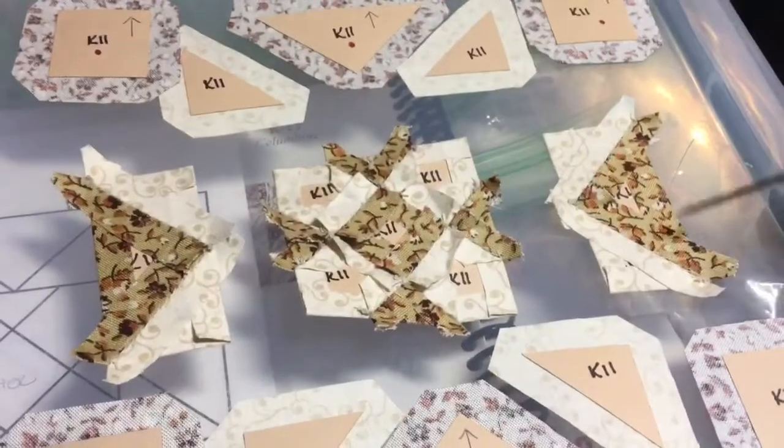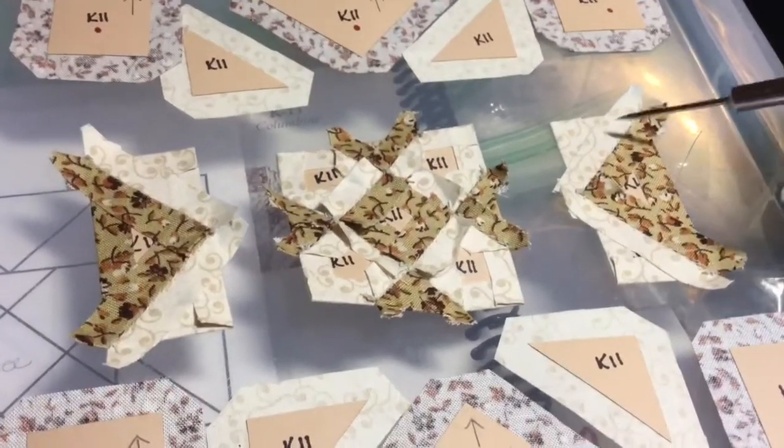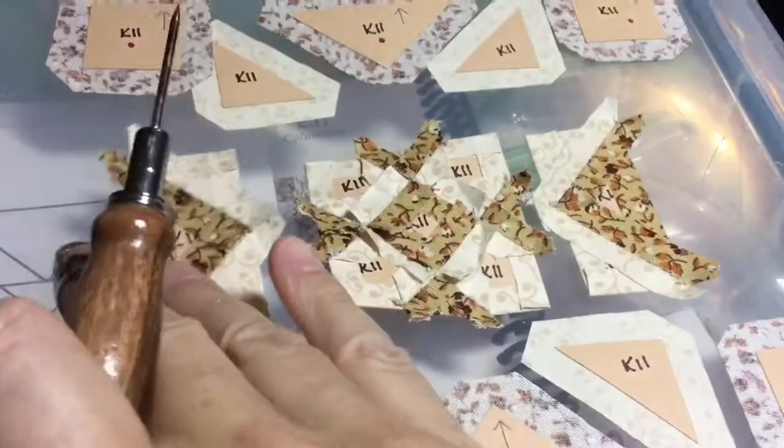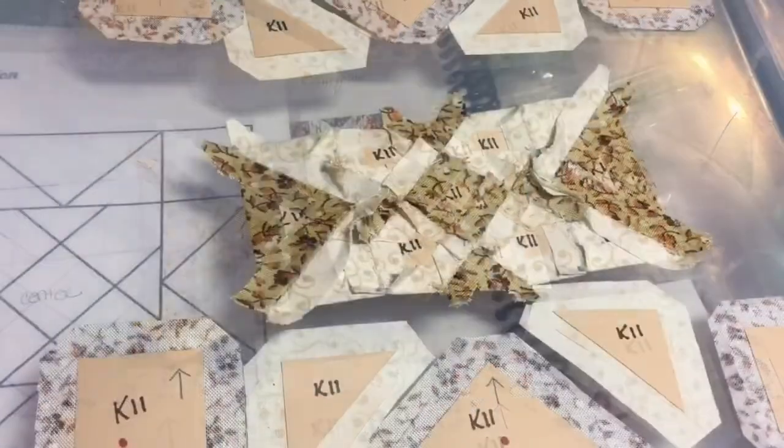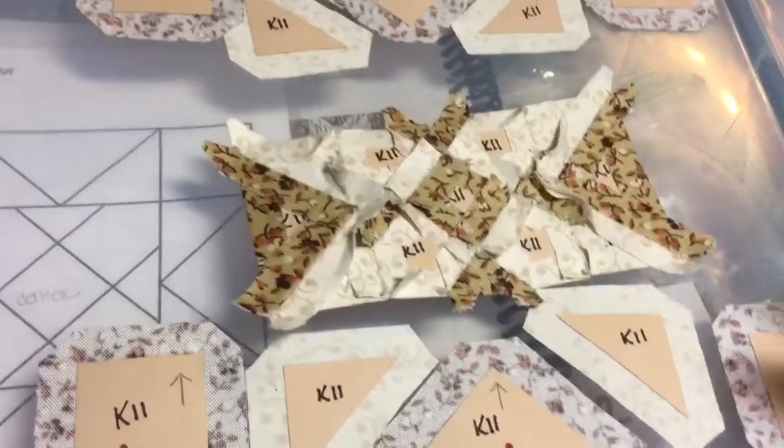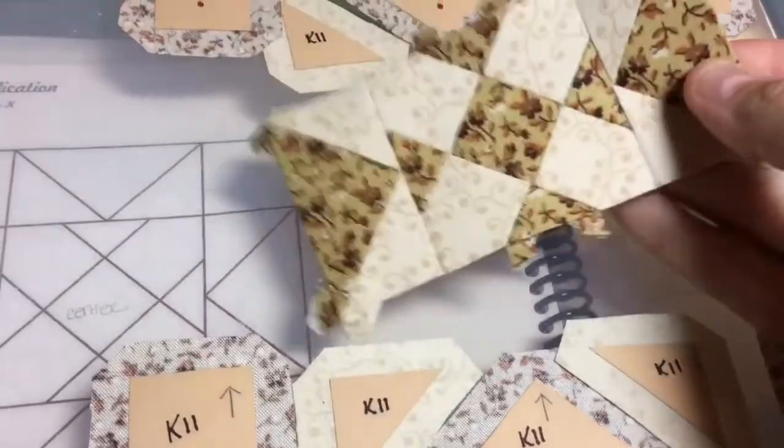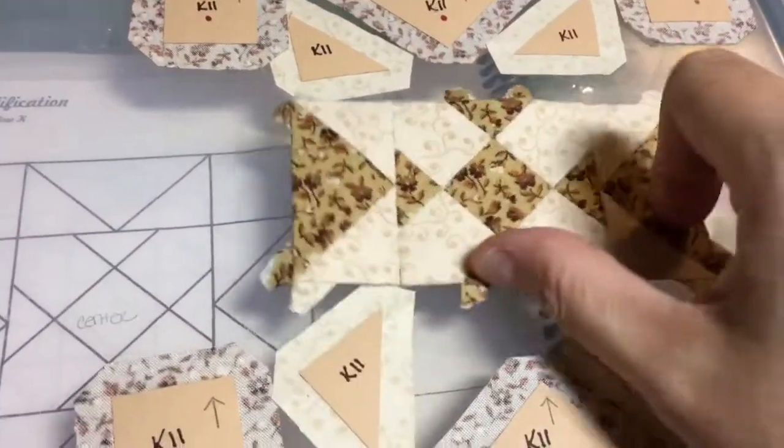And now that this right side flying geese unit is all connected I can connect these two to the center. So now I've got the entire middle row all assembled with my points in line.